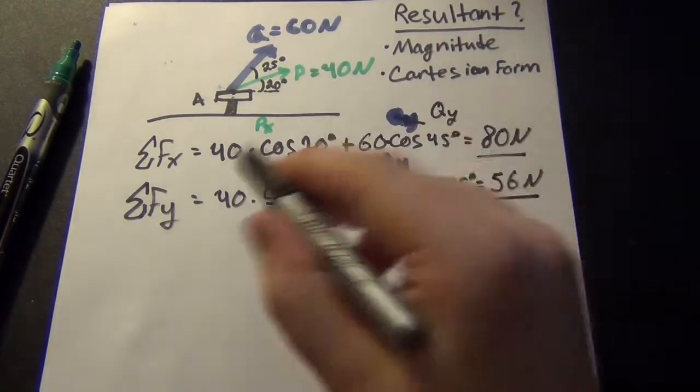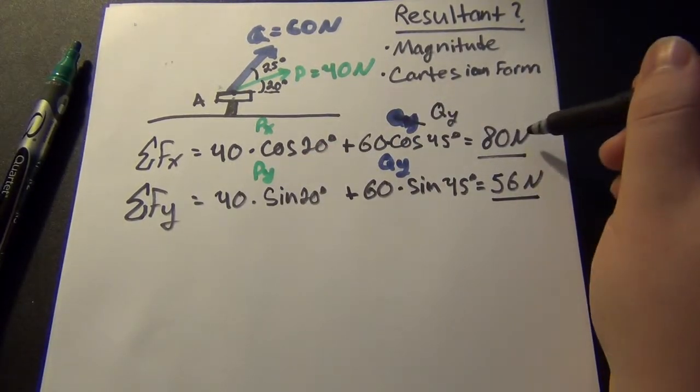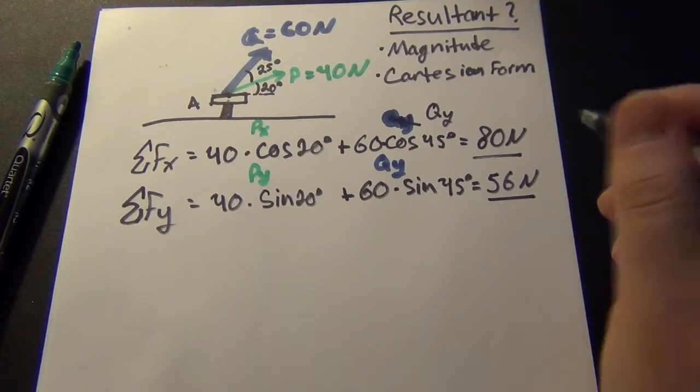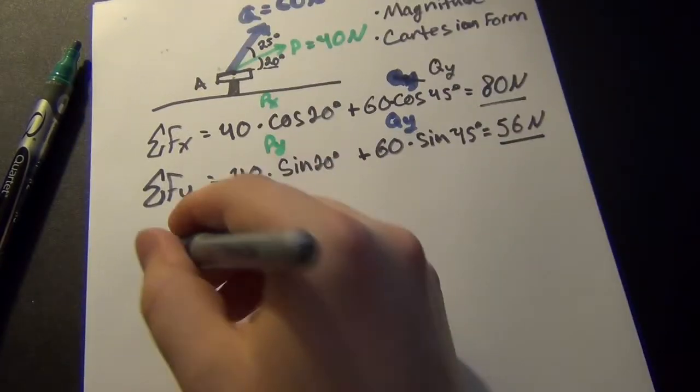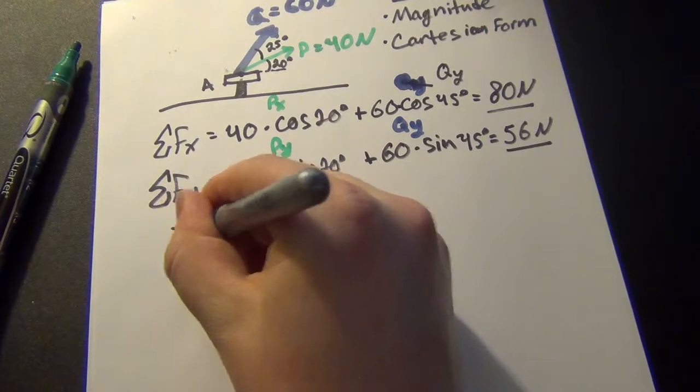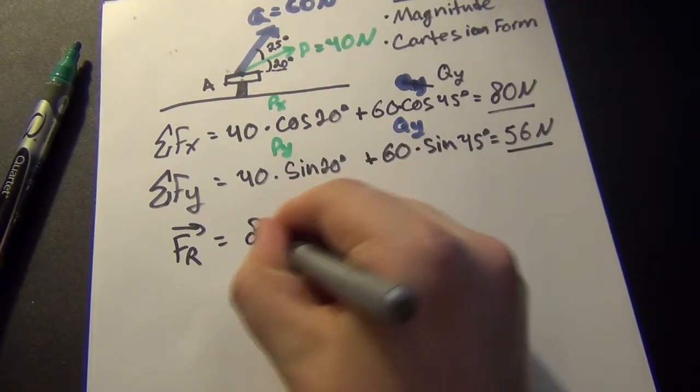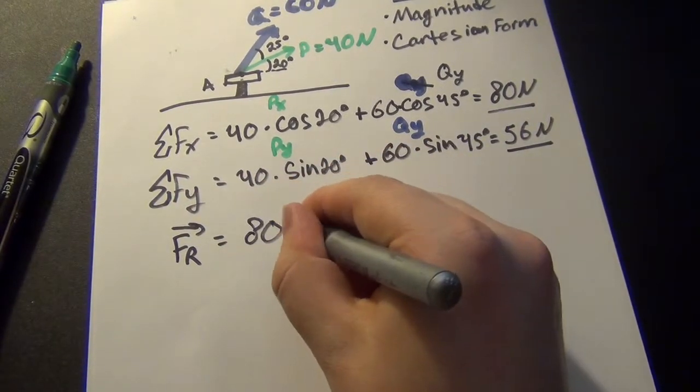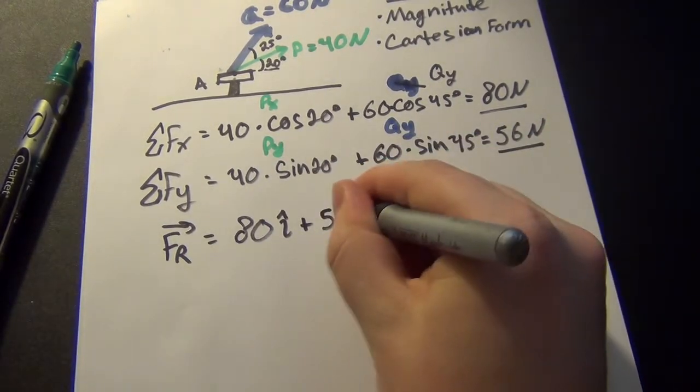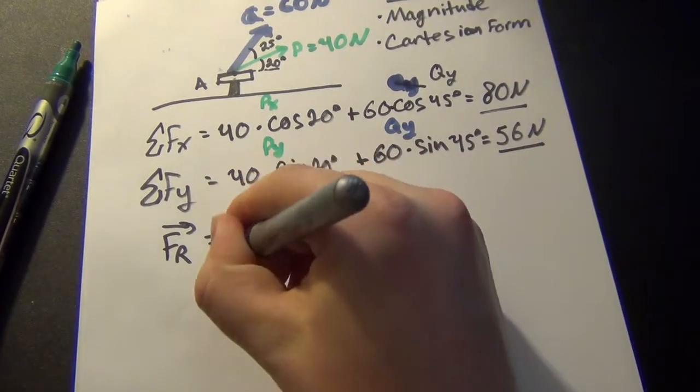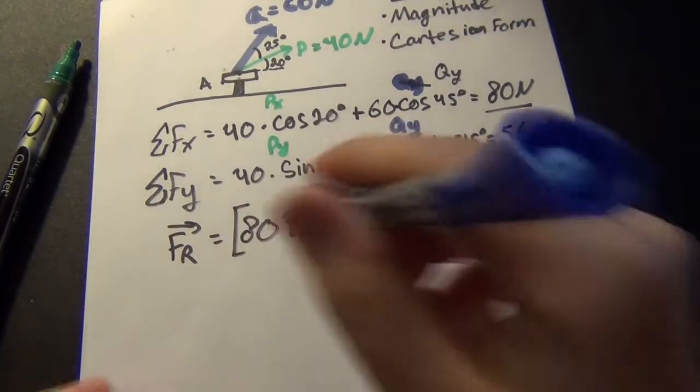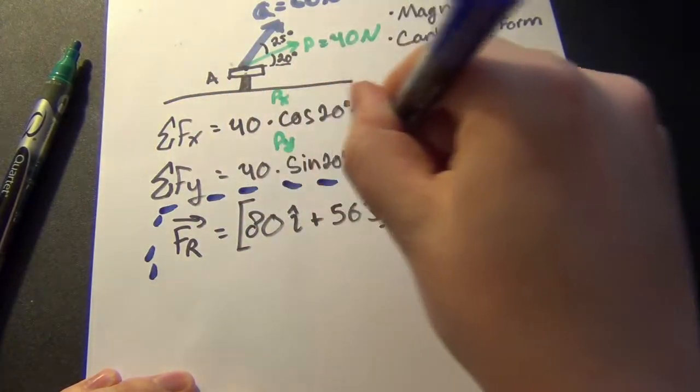All right, so now we have the resultant X component and the resultant Y component. So now what we can do is we can write this in Cartesian form because we have the X and the Y. And so F resultant, this is going to be a vector, and we have positive 80 Newtons in the i-hat direction, plus 56 Newtons in the j-hat direction. And I like making it clear that all of these are Newtons, and so this is one of our answers.